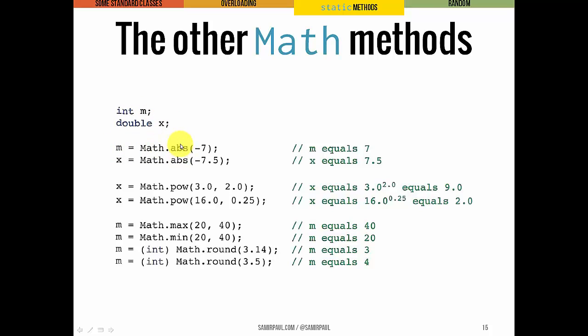If I take the absolute value of negative 7, then I get 7 stored in m. If I take the absolute value of negative 7.5, then I get 7.5 stored in x. Likewise, Math.pow of 3 comma 2. Pow is the method that we use for exponentiation.